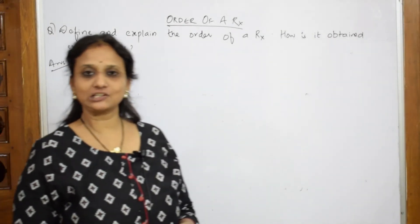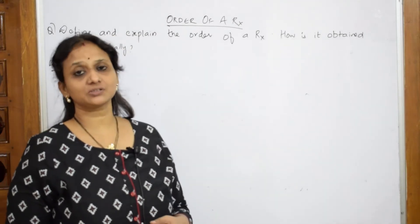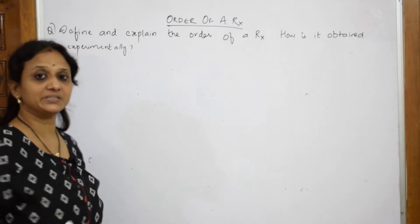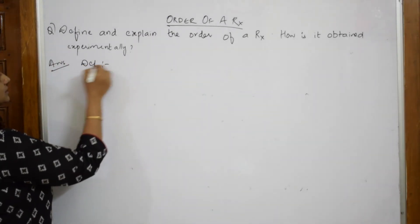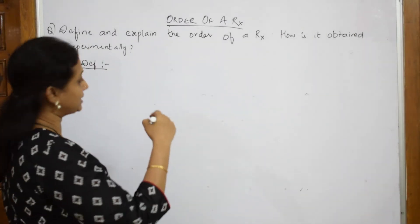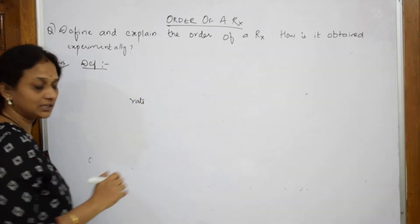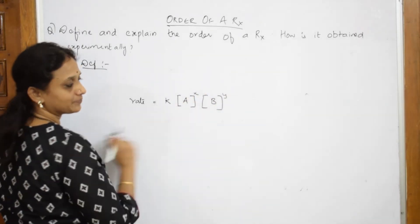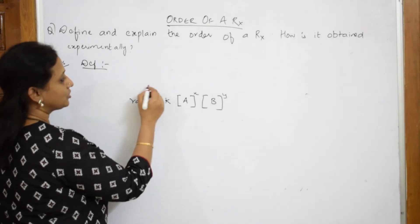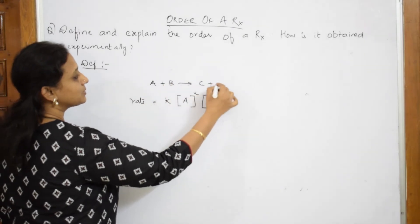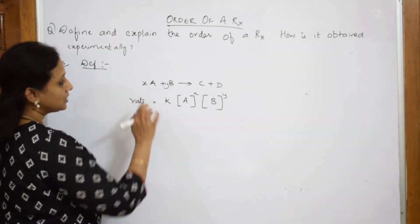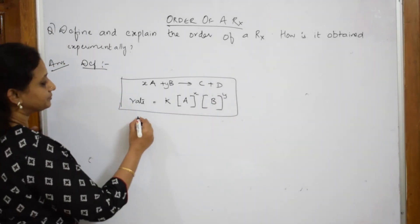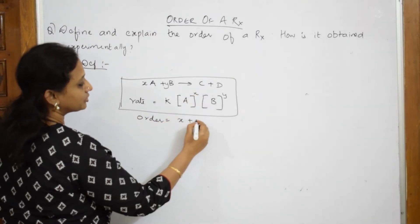We have already done rate law and rate constant. Now let us do one more concept: order of a reaction. I have given it in question form. Define and explain the order of a reaction. We very well know: rate is equal to rate constant K multiplied by concentration of A raised to power X and concentration of B raised to power Y. I got this from the reaction A plus B giving C plus D, where the coefficient of A was X and the coefficient of B was Y. Order is equal to the sum of the powers: X plus Y.